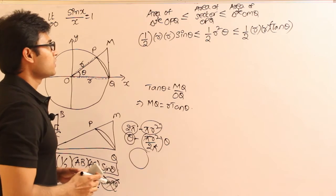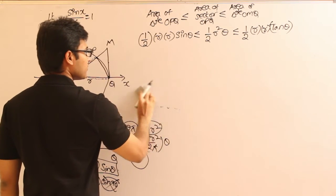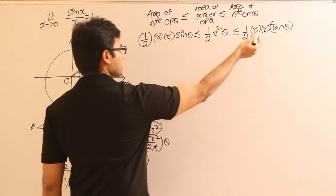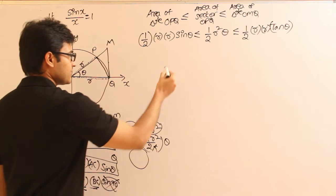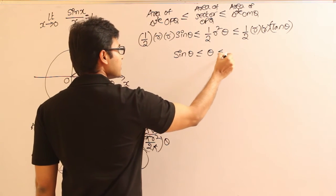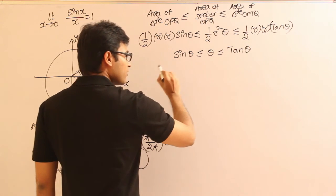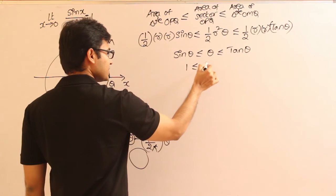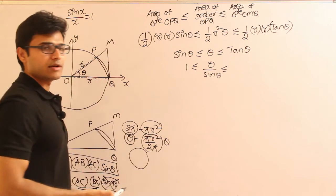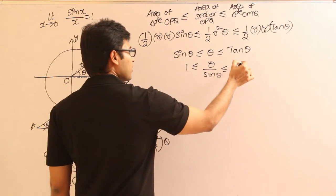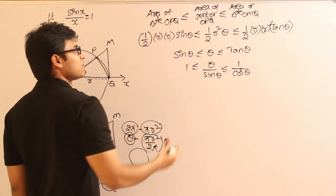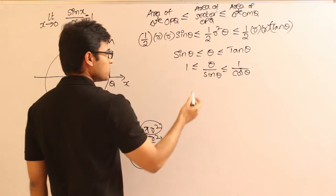Substituting MQ equals R tan theta, the area of triangle OMQ is half times R times R tan theta equals half R squared tan theta. Now, in the entire inequality, half R squared is common to all three terms, so we can cancel it. We get: sin theta is less than or equal to theta, which is less than or equal to tan theta. Now divide the whole inequality by sin theta.